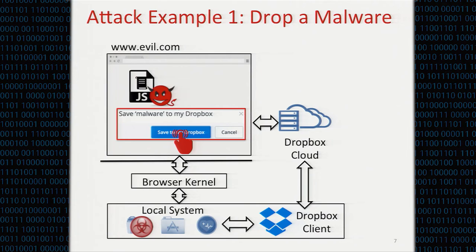Here is how the attack works. Evil.com first loads Dropbox into an iframe, bypasses the SOP, injects malicious scripts, and mimics a click on the save button. The site sends a request to the Dropbox cloud server, and then the client-side software synchronizes with the cloud server and downloads the malware from the attacker's server to the victim's local system. Notably, after synchronization, the attacker's malware on the user's local system still has executable permission — like a drive-by-download, just one step left for the victim to install the malware.